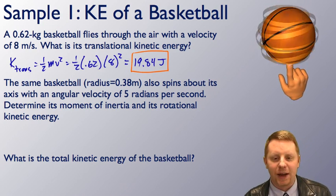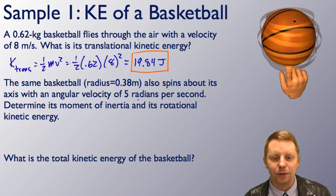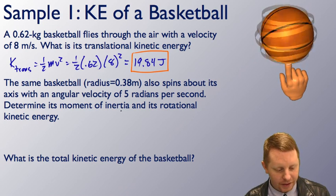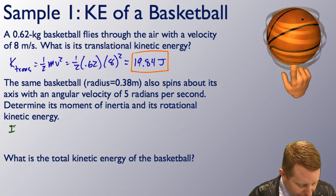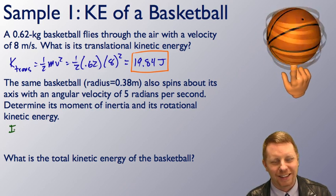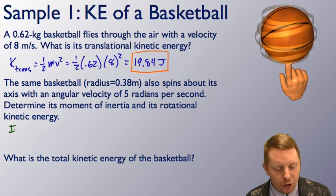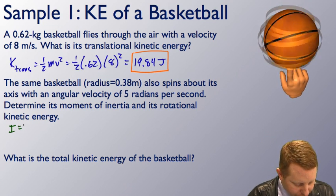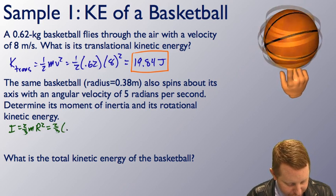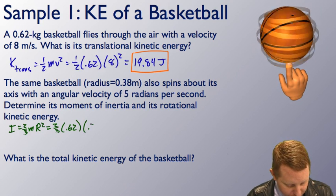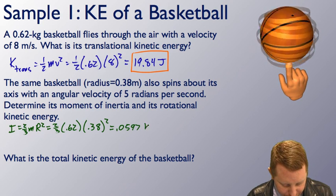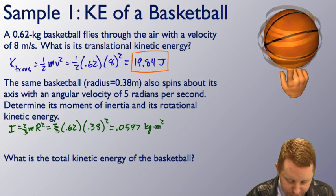The same basketball also spins about its axis with an angular velocity of 5 radians per second. To find its moment of inertia, we approximate it as a hollow sphere. The moment of inertia for a hollow sphere is two-thirds mR squared, so that's two-thirds times 0.62 kilograms times 0.38 meters squared, or about 0.0597 kilogram meters squared.